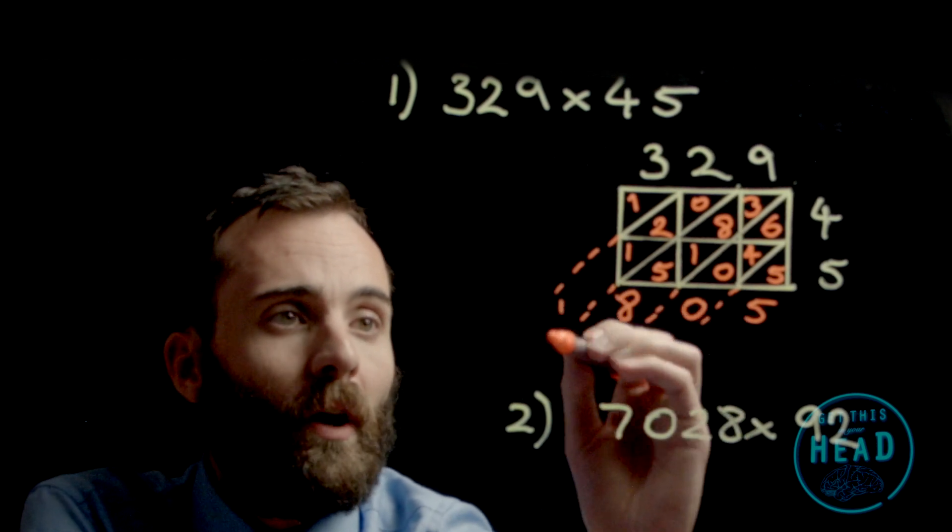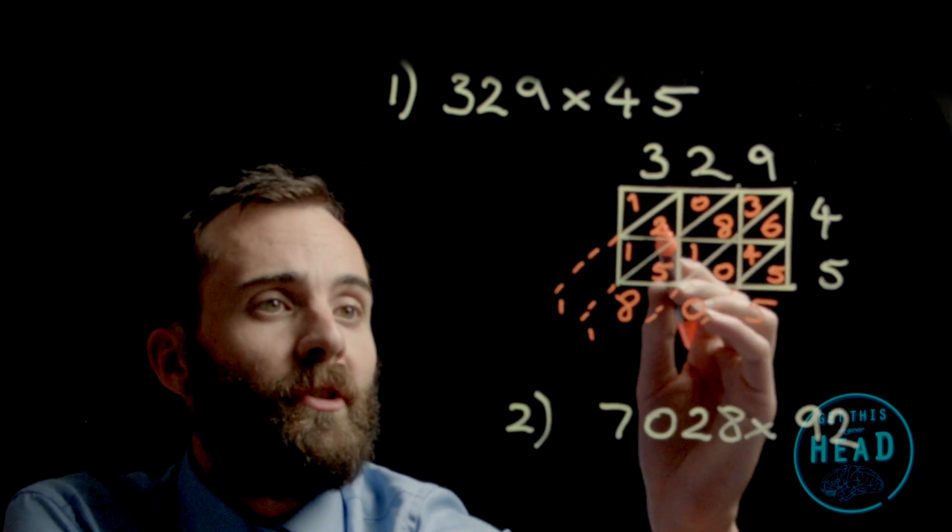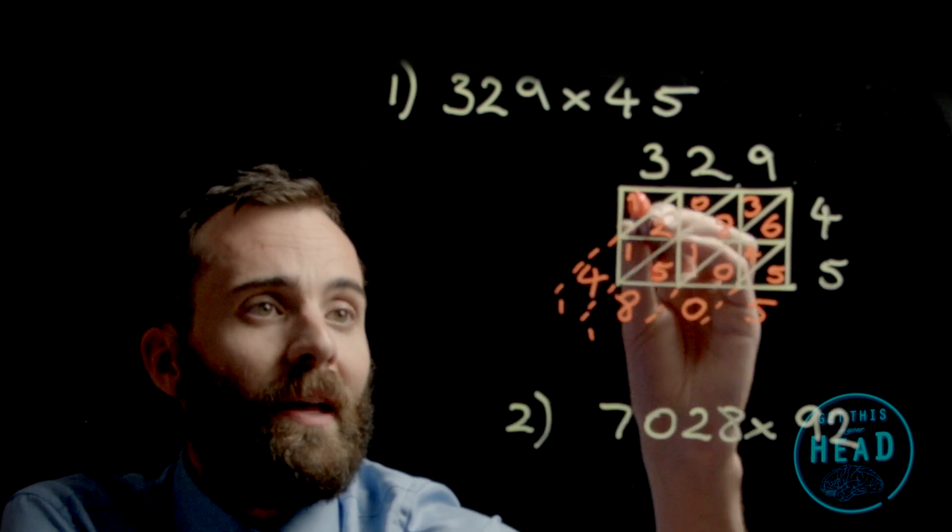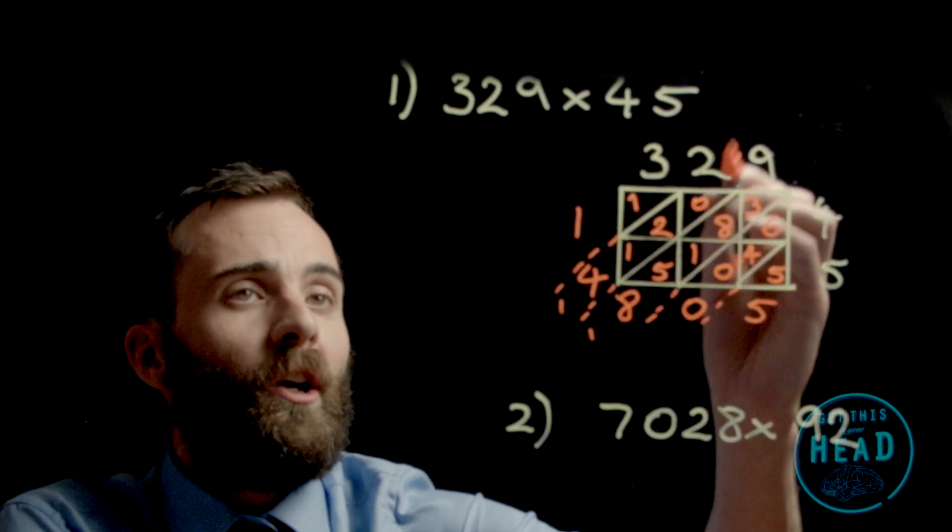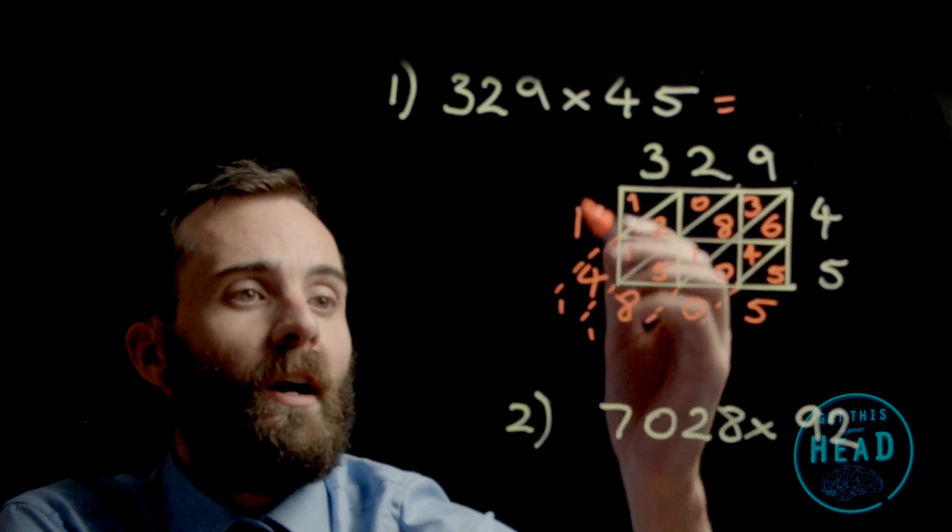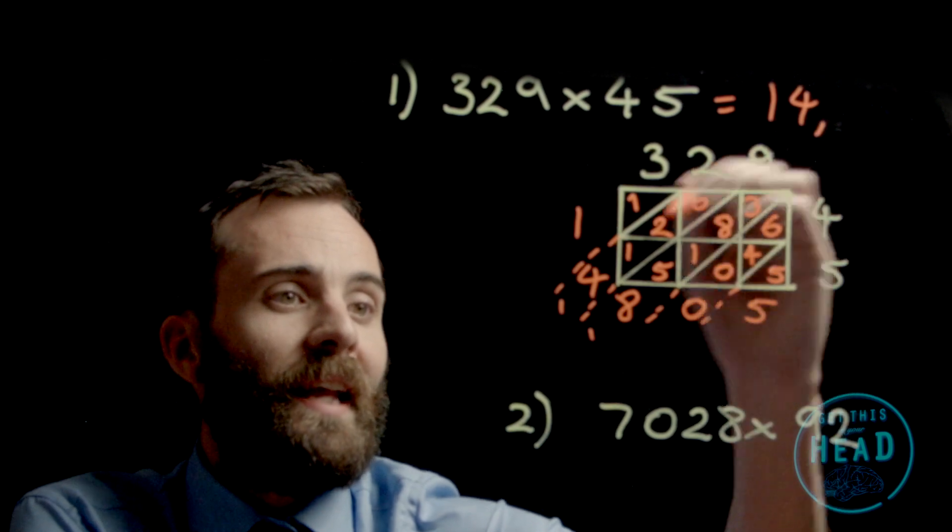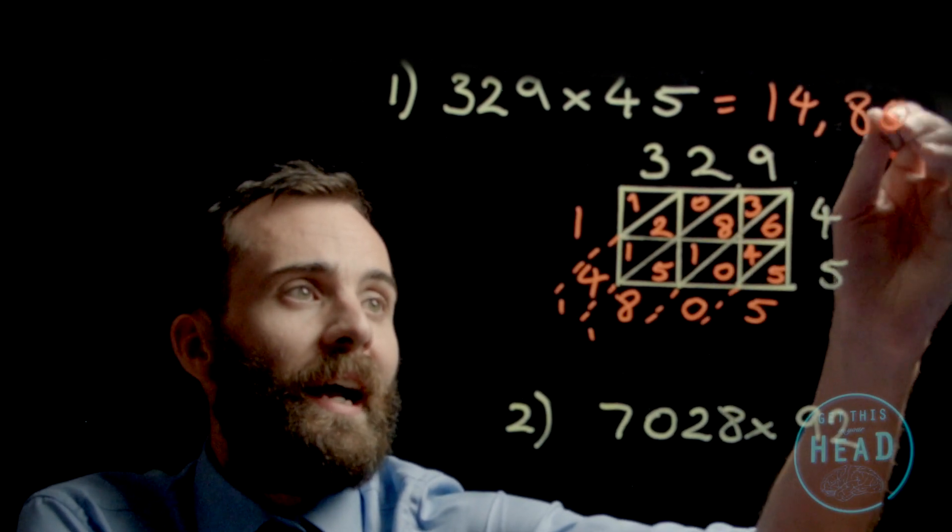So there's an 8 there, and I'll carry the 1 over. 0 add 2 is 2, 2 add 1 is 3, add the 1 is 4, and then the 1 left over. Therefore, 329 times 45 is 14,805.